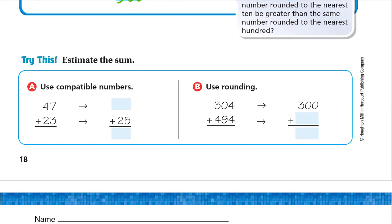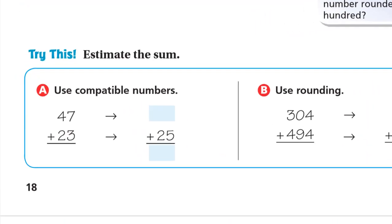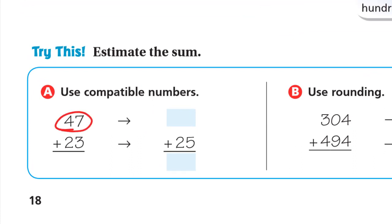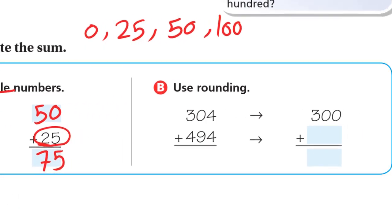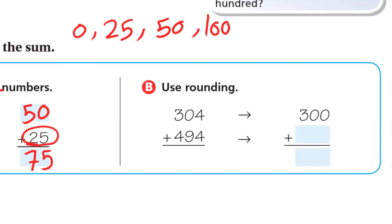Try this: estimate the sum. A, use compatible numbers, and B, using rounding. Using compatible numbers, 47 is close to 50 and 23 is close to 25. If we add 0 plus 5 is 5, 5 plus 2 is 7, it will be about 75. When he says compatible numbers, always think of zeros or 25 or 50 or hundreds, whatever numbers that are easier for you.